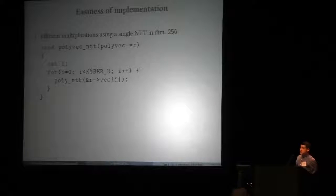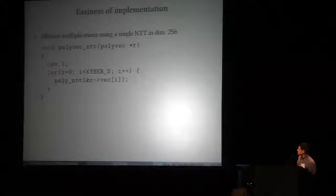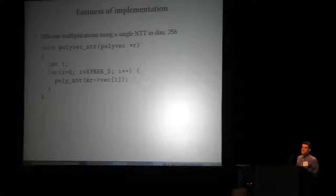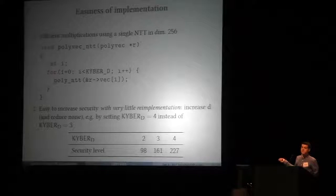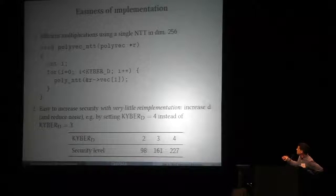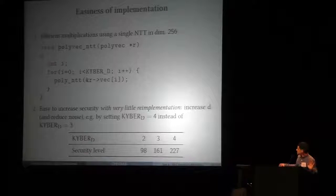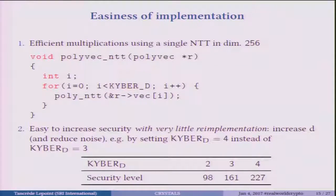What about the implementation? I said it was easy. For example, we're storing the vectors in a polyvec struct. To compute the NTT of this vector, we're just doing a loop with kyberD — the defined parameter D — and doing the NTT on the small elements, which is an NTT of 256 elements. It will also be easy to increase security — if I don't modify any parameter but D and increase D by 1, I gain a lot of security. I lose a little on decryption error, so if I want the same level of decryption error I'll have to increase the noise a little, but otherwise just increasing D gives a lot more security.